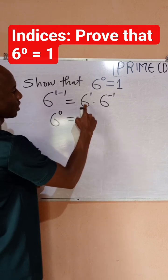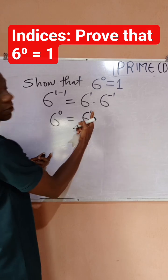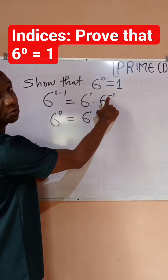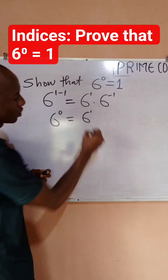This can be equal to, now, 6 raised to power 1, which I don't have to repeat again. Whenever you have negative index, it simply means that it can come down.